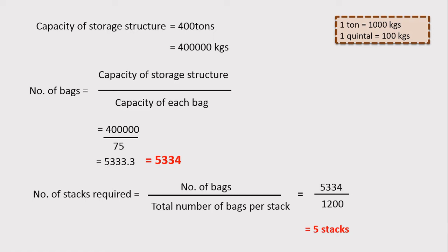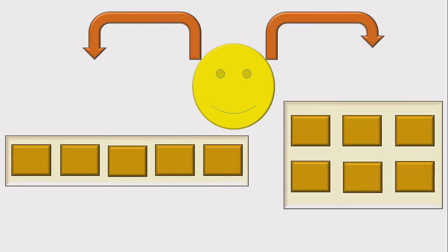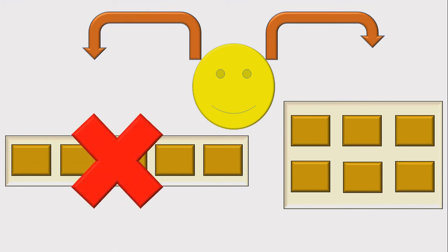We need to propose a storage structure that can accommodate 5 stacks. There are two possibilities: one structure with 5 stacks laid side by side, and a second structure with 6 stacks arranged in 2 rows and 3 columns. The first option occupies more area and makes handling difficult due to the longer distance. The second is ideal, following the rule of thumb where length is twice the width, so the ideal structure is the second one.